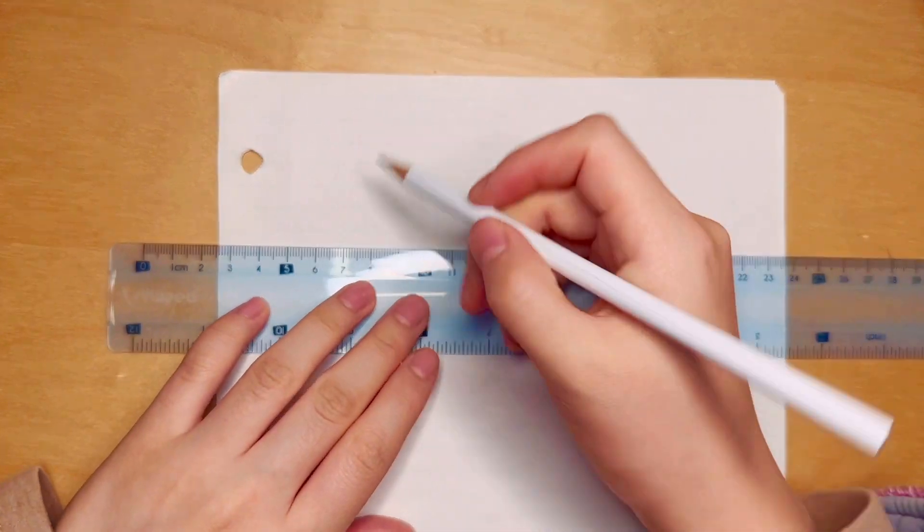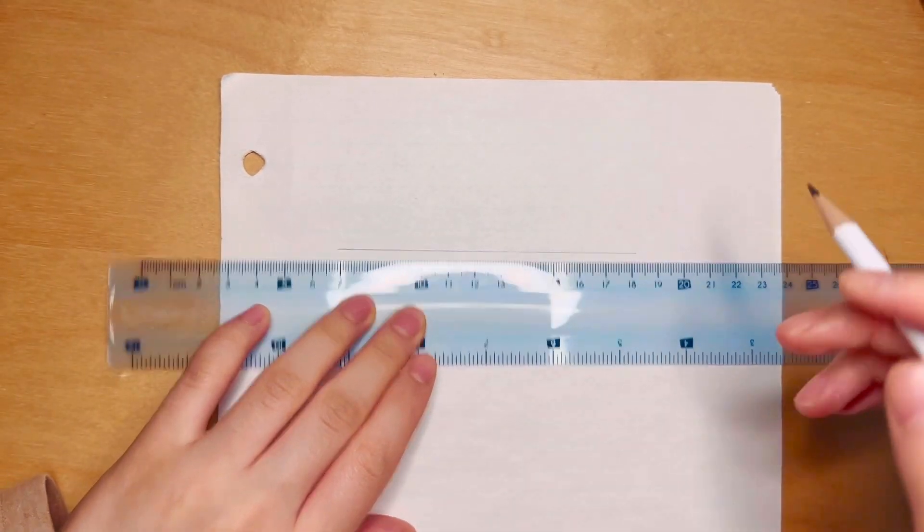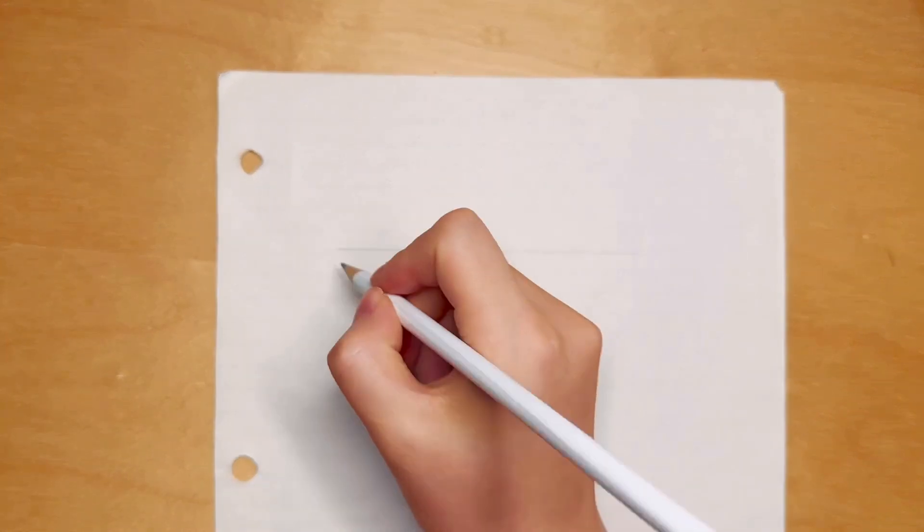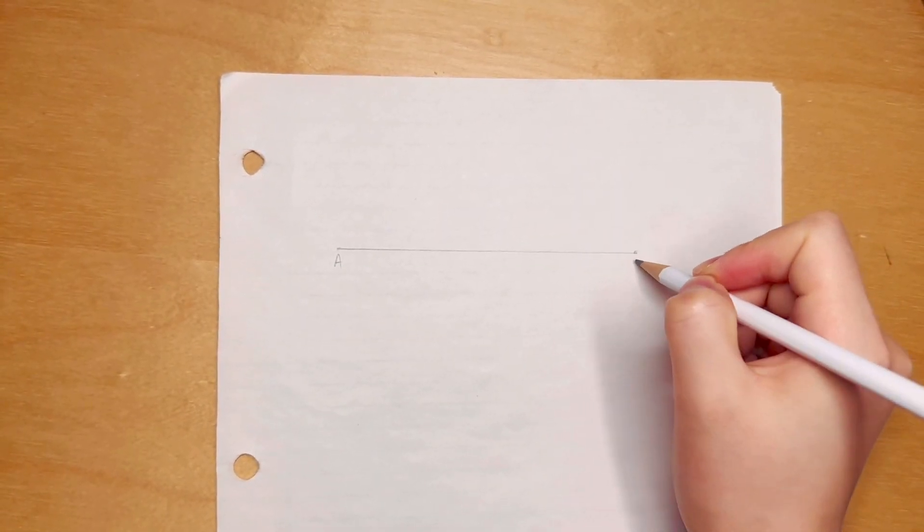For now I'm going to give you a line segment. Let's call this line segment AB and I want you to draw a line that is perpendicular to it. You can pause the video and try it on your own.